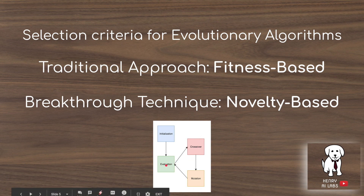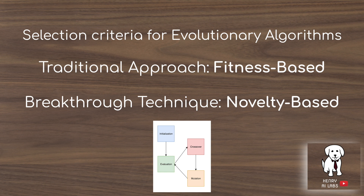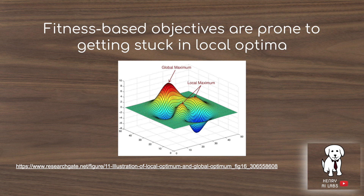Usually when we evaluate evolutionary algorithms, we just use some kind of fitness score. In the biped locomotion task, we'd ask how many meters did the robot travel in the 15 seconds it was given to move. In maze navigation, we'd ask how close did the agent get to the finish line. But novelty would ask: did the biped locomotion robot do something different than it's done in the past? Has the maze navigation agent found a new spot on the map it's never seen before? Using fitness-based objectives are prone to getting stuck in local optima, also referred to in the paper as deceptive objectives. The agent has no real way of escaping the top of a local maximum using crossover and mutation, especially in high dimensional space.